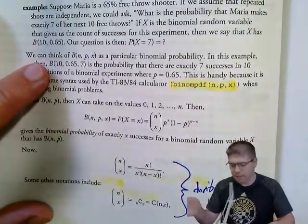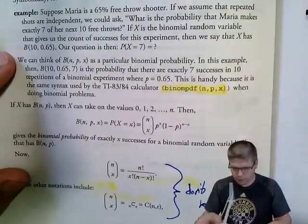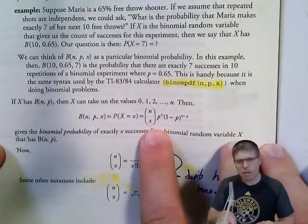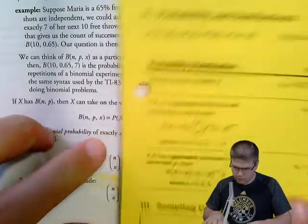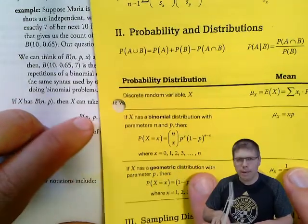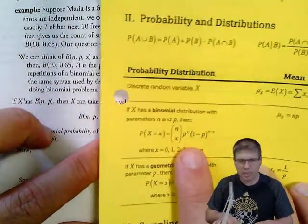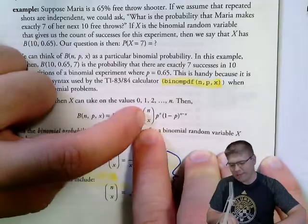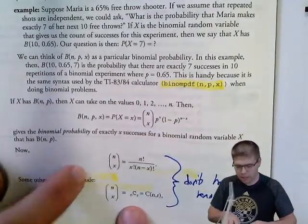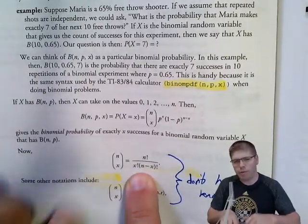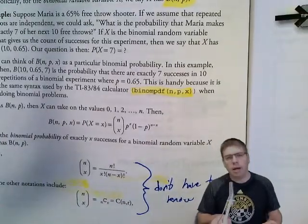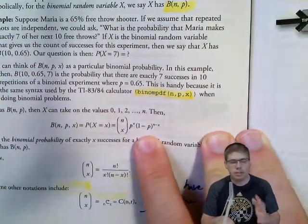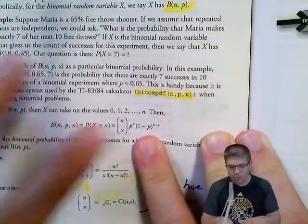We can calculate binomial probabilities with the formula, but we also have binomPDF and binomCDF on the calculator. The binomial probability formula is on your formula sheet, so you don't have to memorize it. The first piece is the binomial coefficient — a combination, n-choose-r — but you really don't need to derive that; you just need to recognize it, and it might show up in multiple choice.